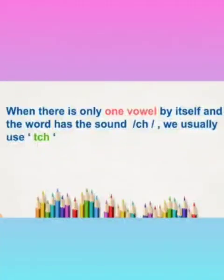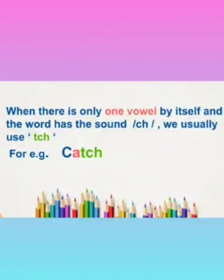For example, here you can see the word catch. Here there is a vowel a which has no letter friend after it, and you hear the sound ch. So when the vowel is alone by itself and you hear the ch sound, then you write t-c-h.